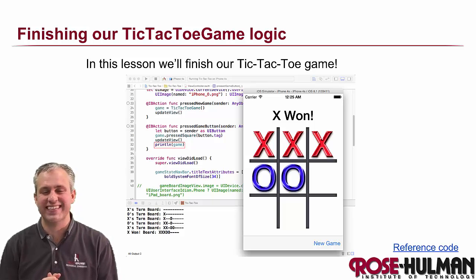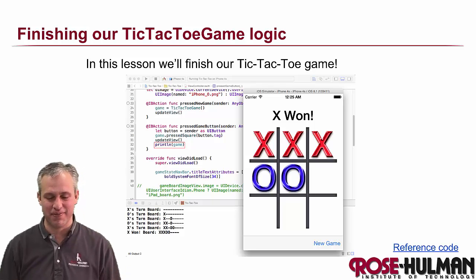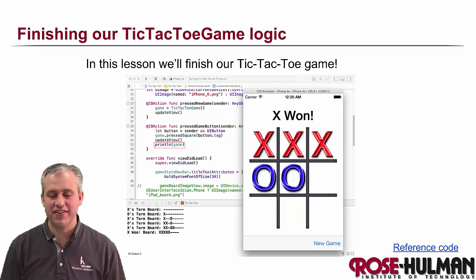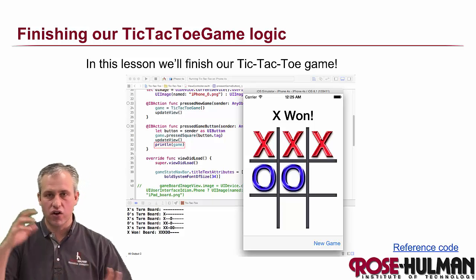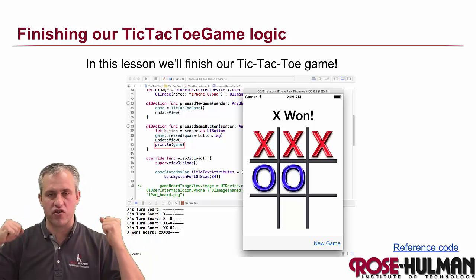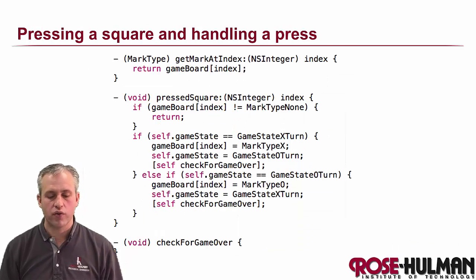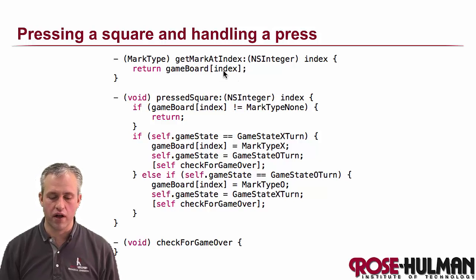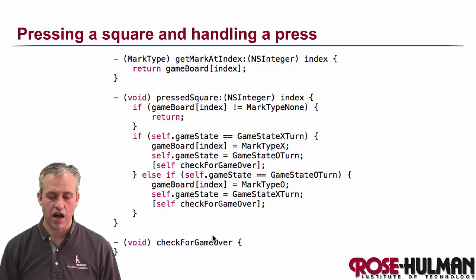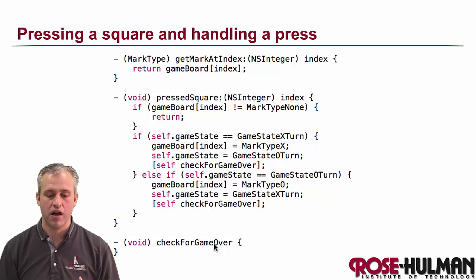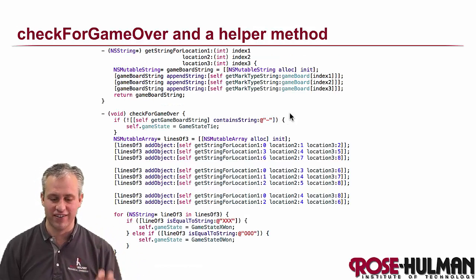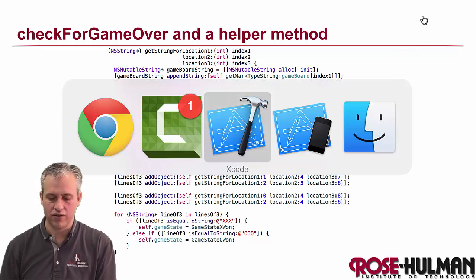Welcome back. We're going to finish our tic-tac-toe game. It's going to get called from our Swift code and it'll all magically work as soon as we finish writing the pressed square button. We're going to implement get mark type at index, which is a short one-liner, and then we'll do press square. Press square is fairly easy, but it'll also necessitate check for new game, which is going to be harder.